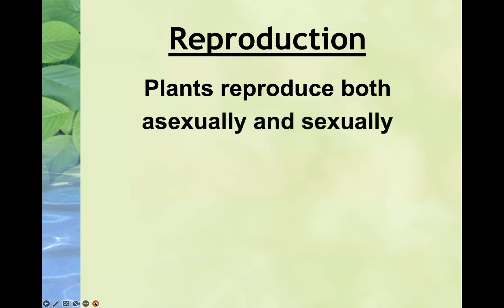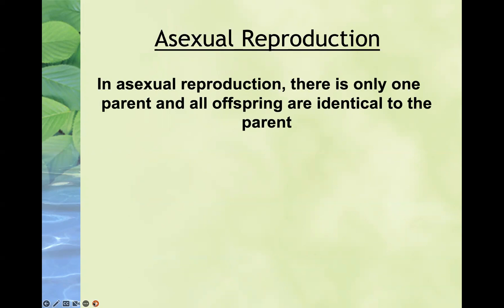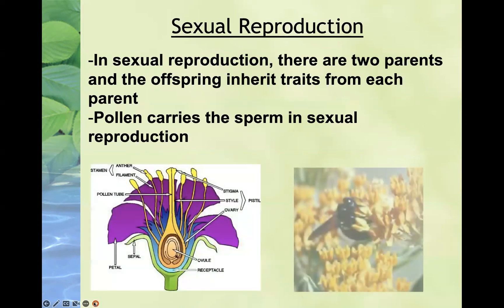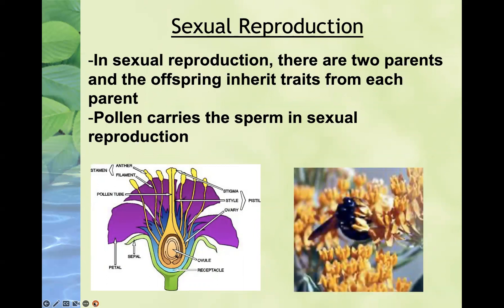Plants have the capability of reproducing both asexually and sexually. Asexual reproduction is characterized by the requirement for only one parent, and all offspring generated are essentially a clone — identical to that parent organism. Sexual reproduction requires two parents, and the offspring are basically a hybrid, inheriting traits from both parents. In the case of plants, we rely on pollen to carry the sperm in sexual reproduction, and we see bees as very important role players in pollination.